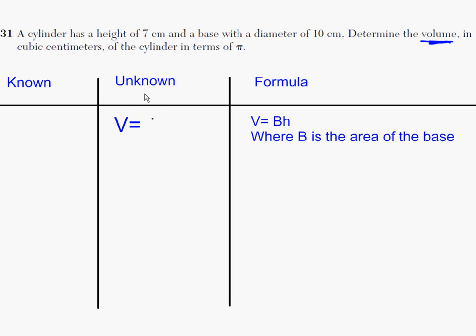So once I identify what my unknown is and what my formula is, I'm going to go ahead and write down what I do know. So I know that the height is 7 centimeters. I know that the diameter is 10 centimeters.